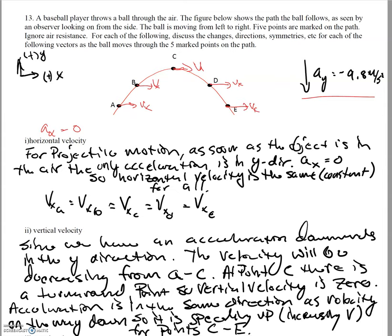On the way up, the velocity is positive in the y-direction because that's what's causing the ball to move up. So we have a large Vy to start, then a little bit smaller, and then at the peak Vy equals zero. Then it switches direction — since we're now moving downwards, we have a velocity in the negative y-direction, and that is increasing because the velocity is now in the same direction as acceleration.